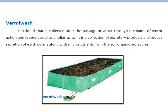Vermiwash is a liquid collected after the passage of water through a column of worm action and is very useful as a foliar spray of micronutrients or macronutrients. It is a collection of excretory products and mucous secretions of earthworms along with micronutrients from soil organic molecules. This picture shows how we collect vermiwash from vermicompost.